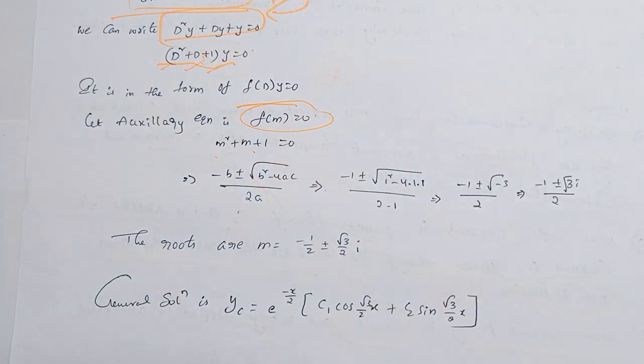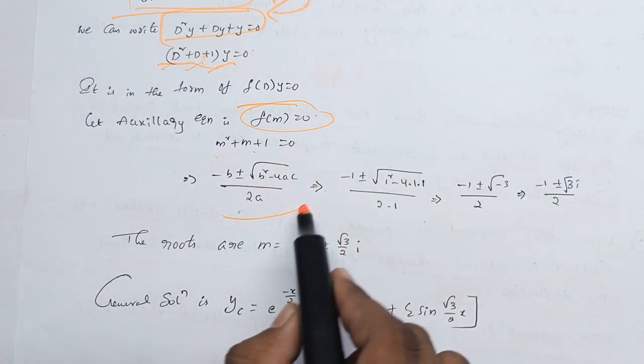The formula is: m = (-b ± √(b² - 4ac)) / 2a. This is the formula. Where a is the m² coefficient, a is equal to 1.